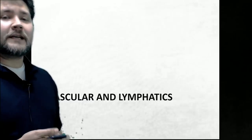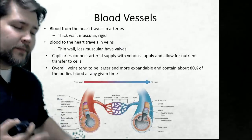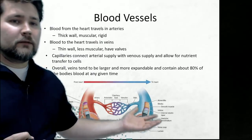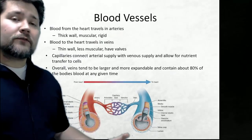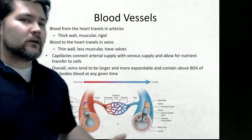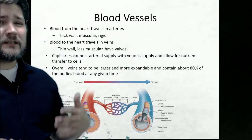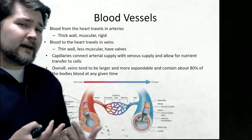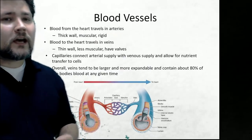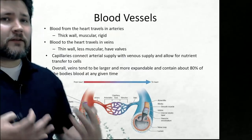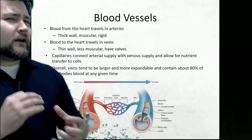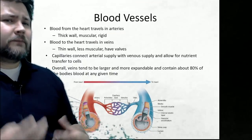We'll start with vascular and lymphatics. In order for the body to sustain itself, it needs to get its nutrients from one part of the body to the other, and that's done through the vascular system. Whenever blood is being transported away from the heart containing nutrients or substances like oxygen essential for the body to be alive, those are carried in arteries. Arteries are going to be thick-walled, very muscular, and very rigid — they hold their shape.